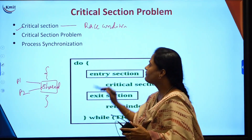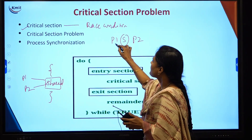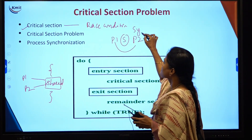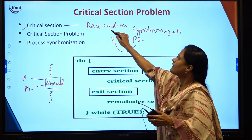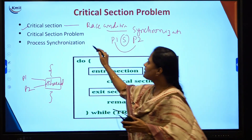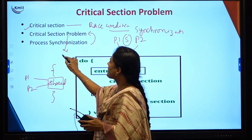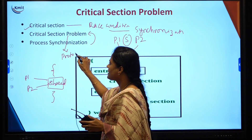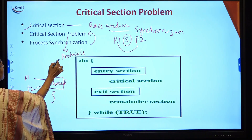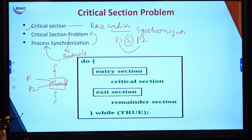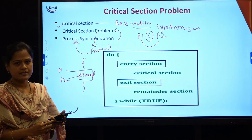To overcome that, if we have P1 and P2 and both want to use a shared variable, some type of synchronization is to be achieved. We have to provide synchronization so we will not get the problem of a race condition. For that, we have the critical section problem, which involves designing some protocols. The critical section problem deals with designing protocols that help processes to be synchronized, which will help us overcome the race condition from the previous example.